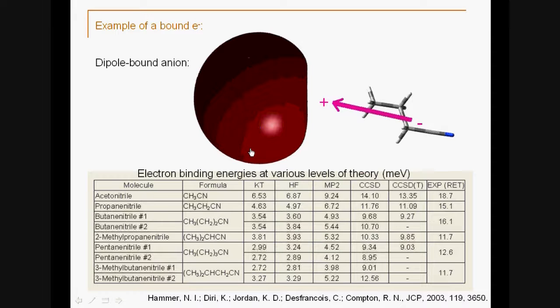Well, that makes sense, because in dipole-bound anions, the electron is bound in an orbital which is outside of the molecular frame and is usually very diffuse, so it's not a valence-bound state.